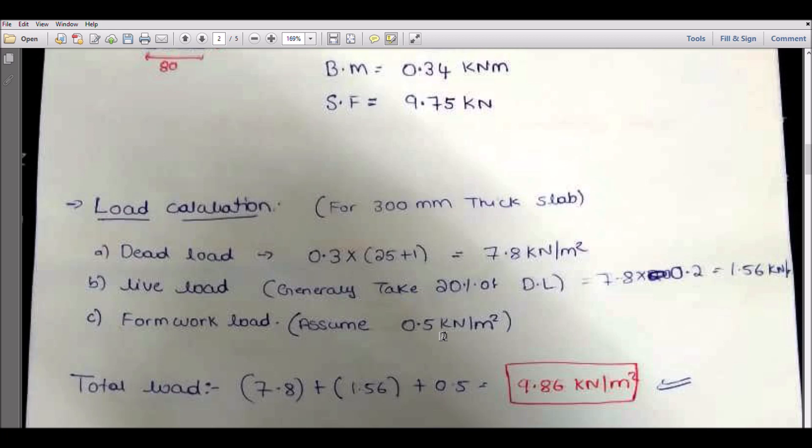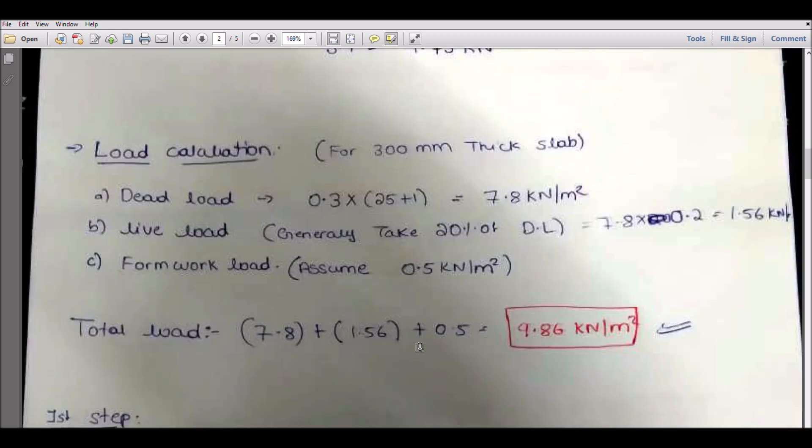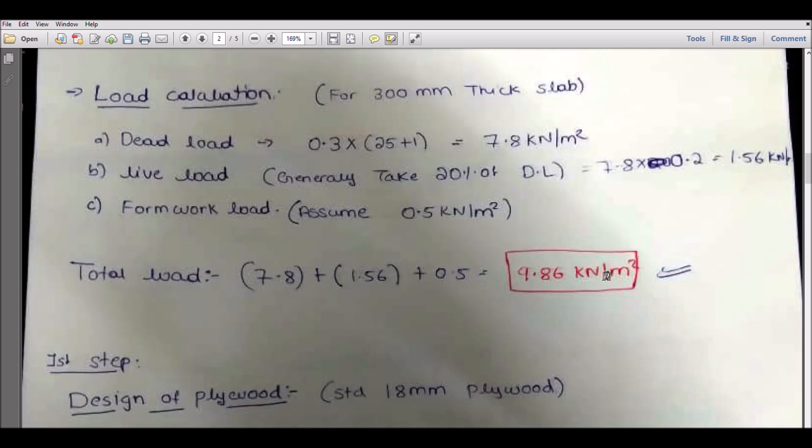If all are metal type beams, this value might increase. So the total load will be around 9.86. In my previous video we calculated the concrete pressure, but now here we are calculating the total load. This load, 9.86, we will consider here.